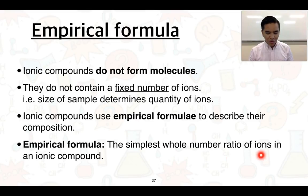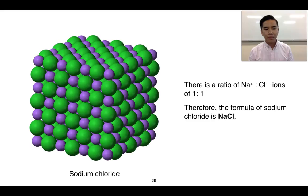This is what we call the empirical formula. It is the simplest whole number ratio of ions that are present in an ionic compound. It's key that we are defining the simplest whole number ratio. When we learn about writing the formula, we are learning about writing the empirical formula.